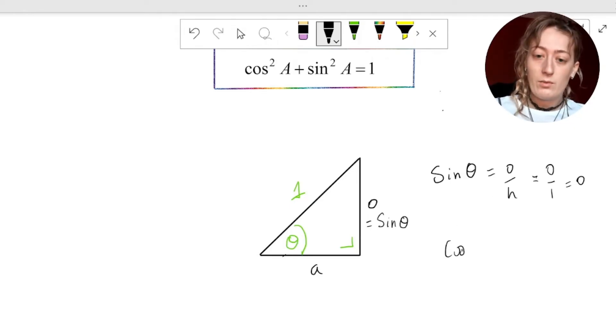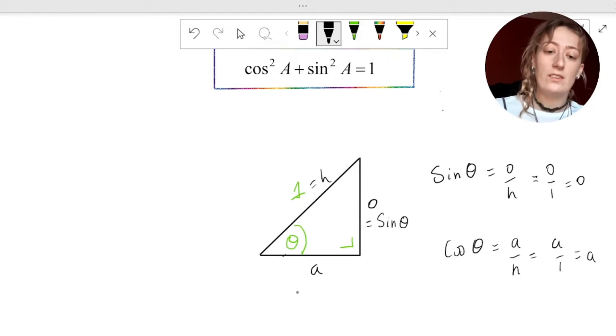Similarly, we have cos theta is equal to A over H, adjacent over hypotenuse. The hypotenuse here we already know is 1 again. So we have A over 1, and that's just equal to A. So the adjacent side is equal to cos theta.